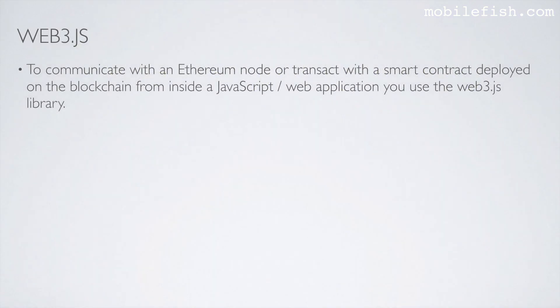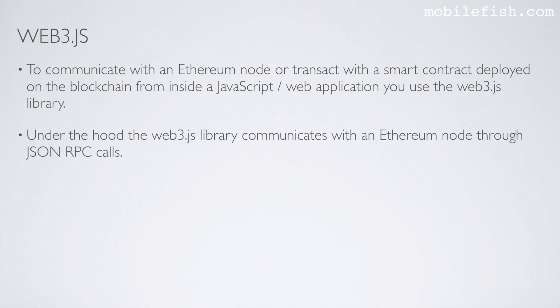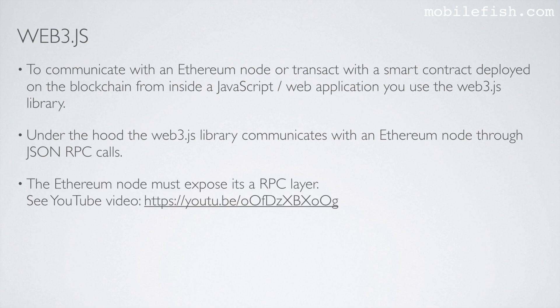To communicate with an Ethereum node or transact with a smart contract deployed on the blockchain from inside a JavaScript or web application, you use the Web3.js library. Under the hood, the Web3.js library communicates with an Ethereum node through JSON RPC calls. The Ethereum node must expose its RPC layer.